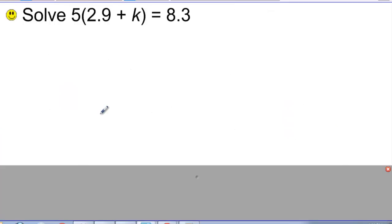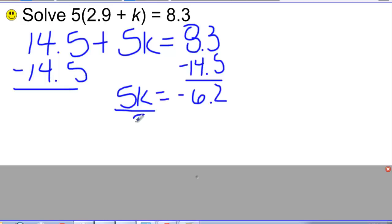Here's another similar type of equation where I could either distribute or I could divide both sides. I'm going to distribute and multiply 5 times 2.9 and then also 5 times k. So I get 14.5 plus 5k equals 8.3, and then I would need to subtract 14.5 from both sides and then divide. So I get negative 1.24. I could also have solved this by dividing both sides right off the bat by 5 and then subtracting 2.9.